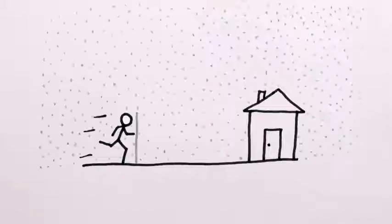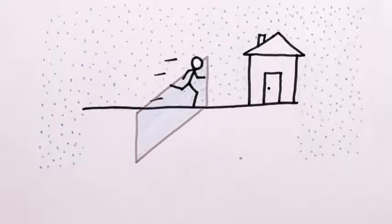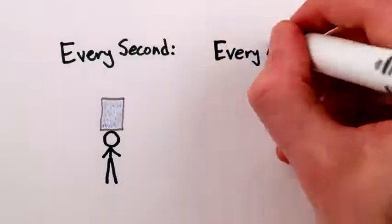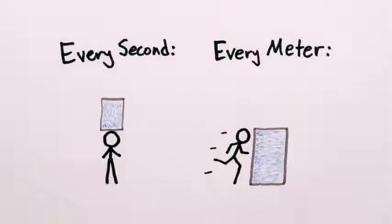In the case of running through the rain, you can figure that out using parallelepipeds again. So, over a given period of time, the same amount of rain will hit you from the top, regardless of how fast you're going. And over a given distance, you'll hit the same amount of rain from the side, again, regardless of how fast you're going.